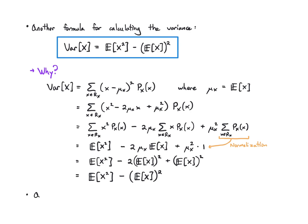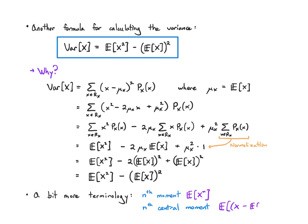To wrap up with a bit more terminology: when we subtract the mean, as we do in the variance, the result is called the nth central moment — specifically, e of x minus its mean to the nth power. The variance can be thought of as the second central moment.